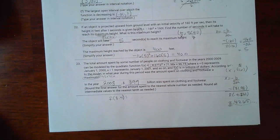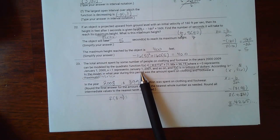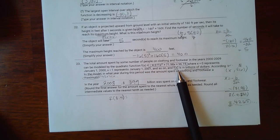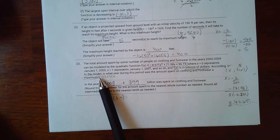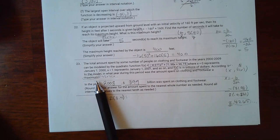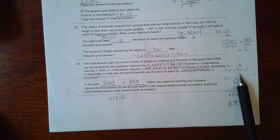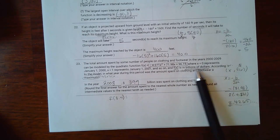For number 23 it says the total amount spent by some number of people on clothing and footwear in the years 2000 to 2009 can be modeled by this quadratic equation, where x equals 0 represents January 1st 2000 and 1 represents January 1st 2001 and so on. And f(x) is in billions of dollars. So according to the model, in what year during this period was the amount spent on clothing and footwear a maximum? Again, maximum means vertex. So looking at this, x is the years and f(x), which is the y value, is the billions of dollars right there.